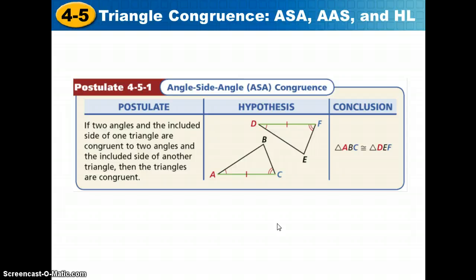So here's our first postulate. It's the angle-side-angle congruence postulate. If two angles of one triangle, A and C, are congruent to two angles of another triangle, D and F, and the included side AC is congruent to the included side of the other triangle, D and F, then the triangles are congruent by angle, side, angle.